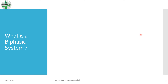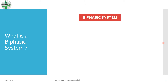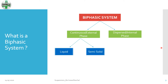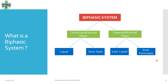In order to understand suspensions and later emulsions, let us first understand what is a biphasic system. As the name suggests, a biphasic system is composed of two phases: a continuous phase, also called the external phase, and a dispersed phase, also known as the internal phase. The continuous phase is further composed of either a liquid or a semi-solid, whereas the dispersed phase or internal phase can be an insoluble liquid or an insoluble particulate.